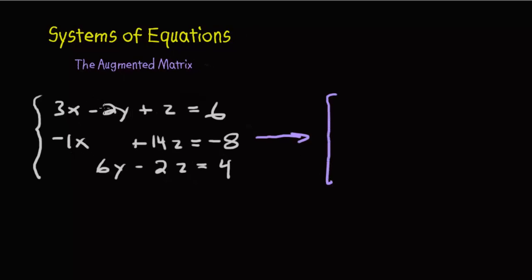And then we're just going to write in the coefficients from our equation. So we're going to have a 3, a negative 2, a 1, and a 6. So that's from our first line.